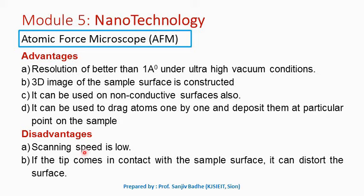The disadvantages include: scanning speed is very low because the tip moves very slowly on the sample surface. If the tip comes in contact with the sample surface, it can distort the surface — this is one major disadvantage of the atomic force microscope.